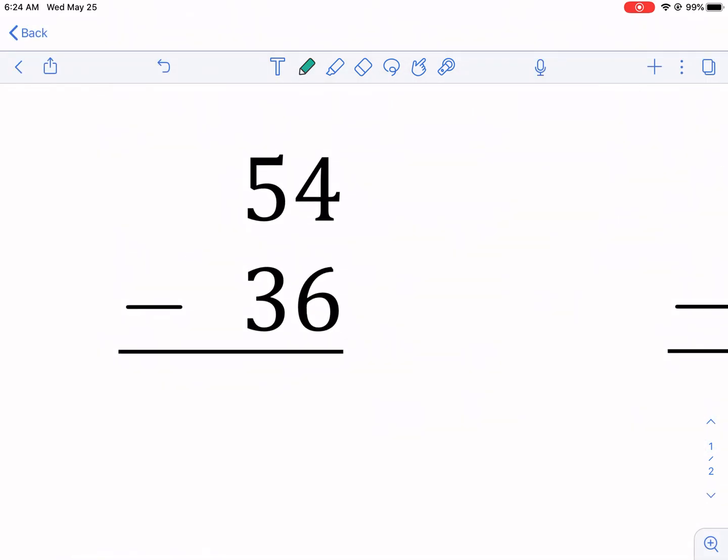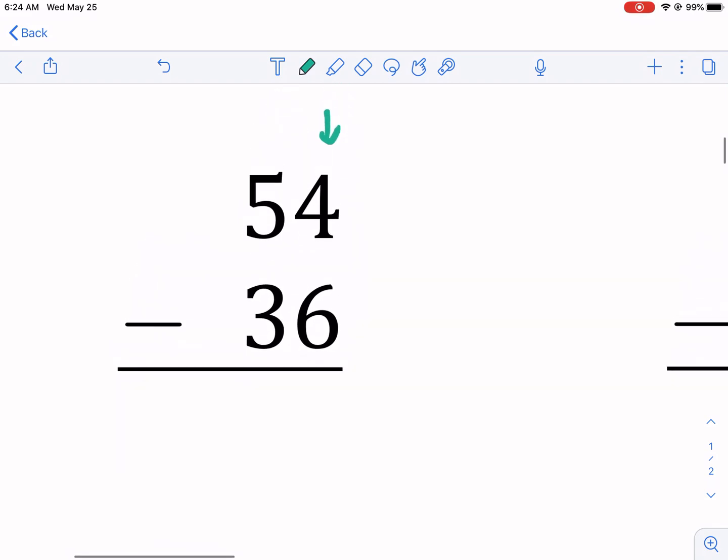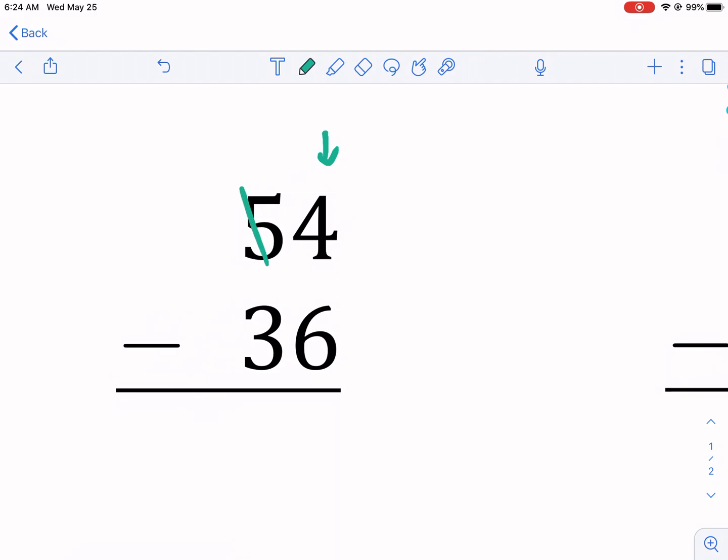So now we have 50 plus 4, 54. 30 plus 6, 36. I'm going to borrow. Well, 4 minus 6, I start always from the ones place, and immediately I see I can't do 4 minus 6. That's a problem. So I'm going to borrow from the tens place.